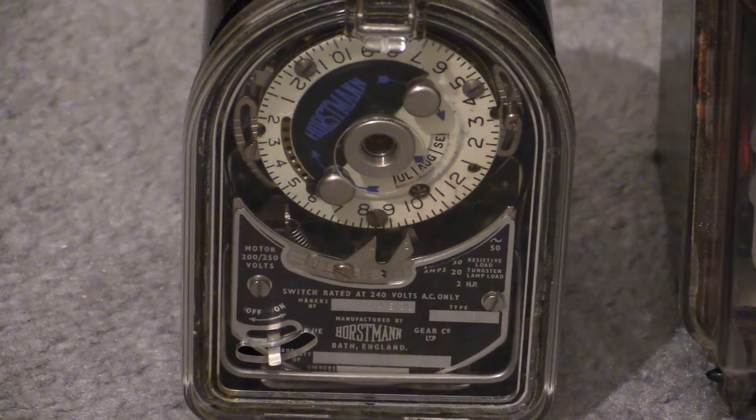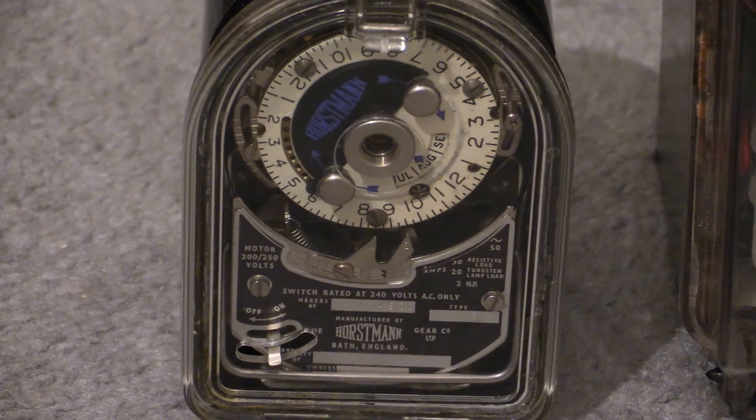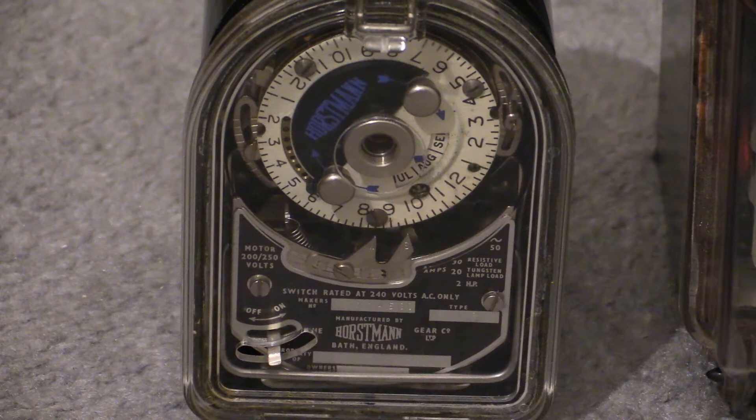What we're going to be looking at in this video today is the Horstman KMK2 time switch. This is a rather basic model that doesn't feature a spring reserve or any form of backup in the event of power cuts. It's a rather small and basic model, probably aimed at consumers or, given its small and compact size, at street lighting or something like that where it can be accommodated into the base of a street lamp.